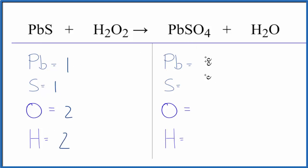On the product side, one lead, one sulfur, and in oxygens we have four, plus we have the one oxygen here in the water. That'll give us five, and then we have the two hydrogen atoms.